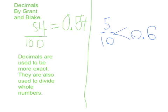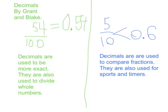5 tenths in fraction notation is less than 6 tenths in decimal notation. Decimals are used to compare fractions. They are also used for sports and timers.